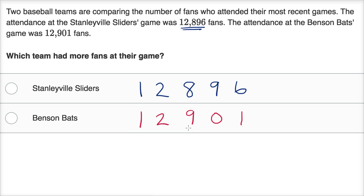So Benson Bats is the larger number — they have more fans at their game. To recap: I start at the largest place value, the 10,000s place — it was the same. Then I move to the next place — same again. Then I move to the hundreds place, and Benson Bats is larger there.